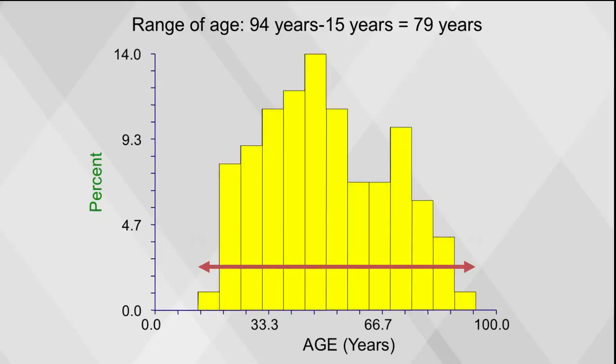This histogram shows a minimum value of 15 and a maximum value of 94. The range is 94 minus 15 equals 79.